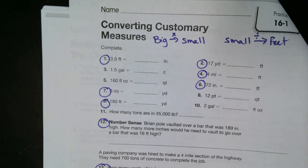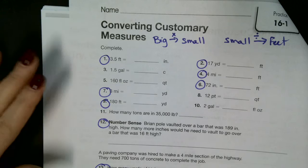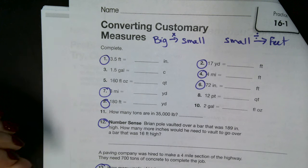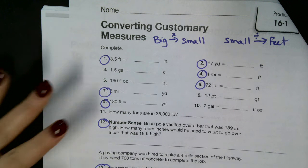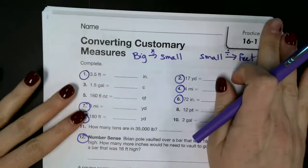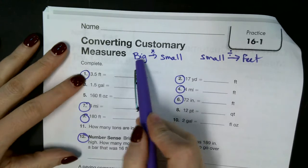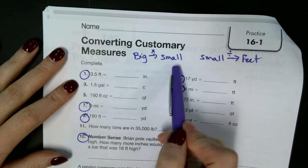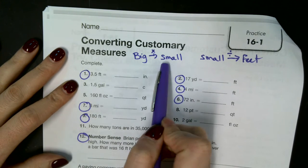So now we're going to go over 16-1 in vision practice, and we're converting the customary measures. We're only going to be working on the length, so inches, feet, yards, miles. Remember our little rule is if it's a big unit of measurement to a small one, feet to inches, we're going to multiply.